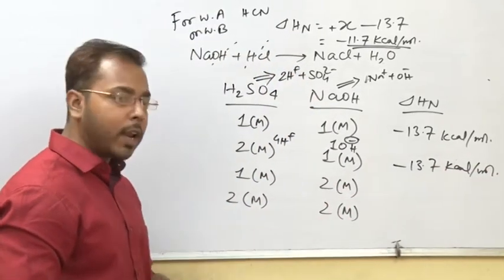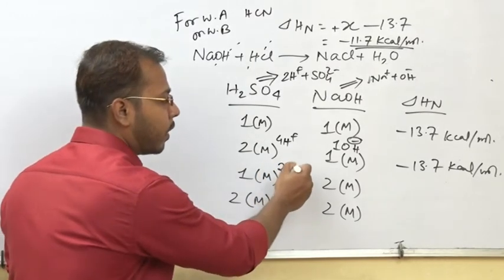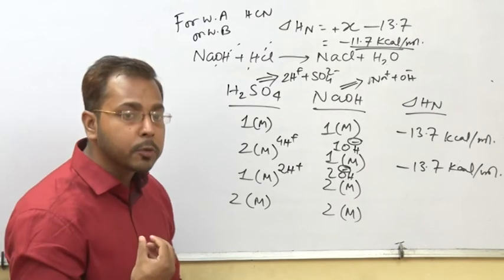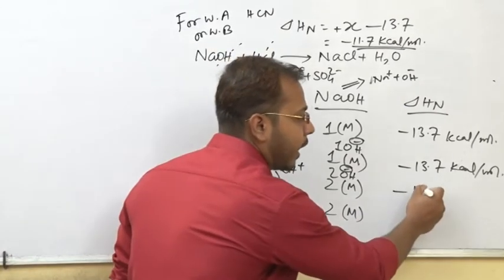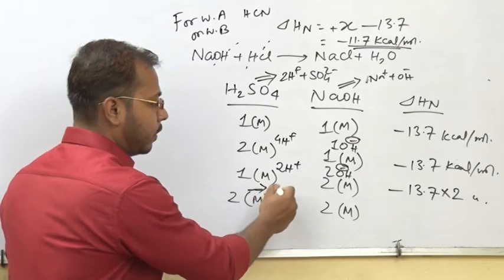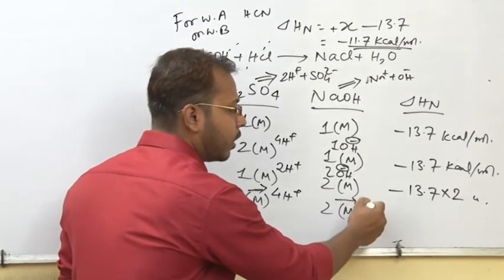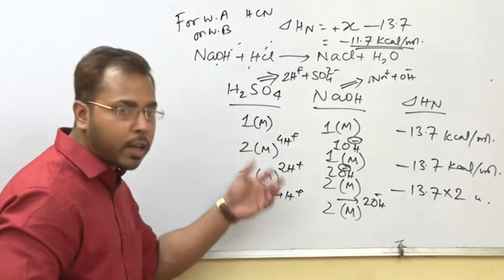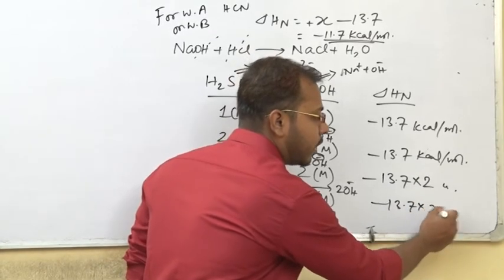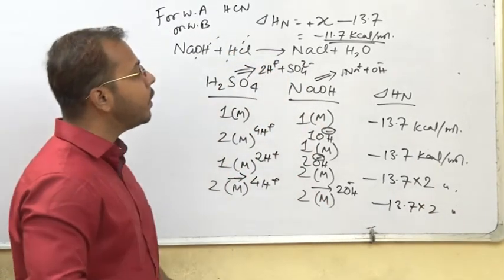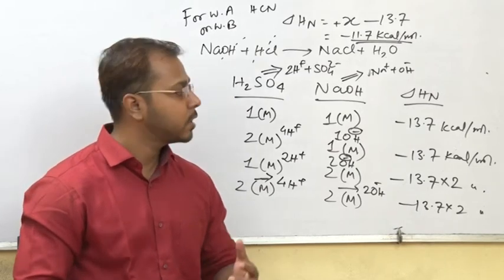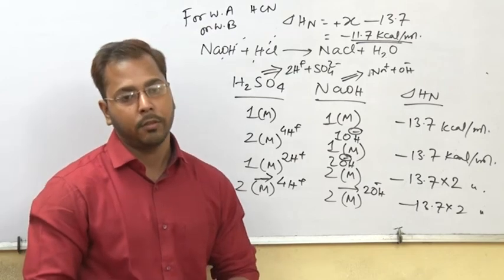For 1 mole H₂SO₄ (giving 2 H+) and 2 moles NaOH (giving 2 OH-), all 2 H+ are neutralized by 2 OH-, so the value is minus 13.7 × 2 kilocalorie per mole. For 2 moles H₂SO₄ (4 H+) and 2 moles NaOH (2 OH-), only 2 H+ are neutralized, giving minus 13.7 × 2 as well. If we remember this chart and understand heat of neutralization, we can solve these problems.